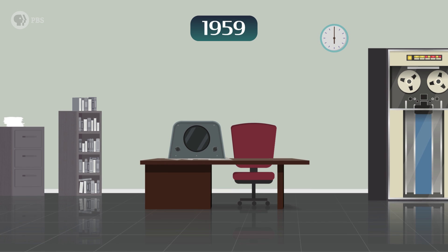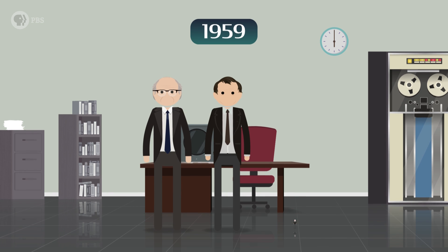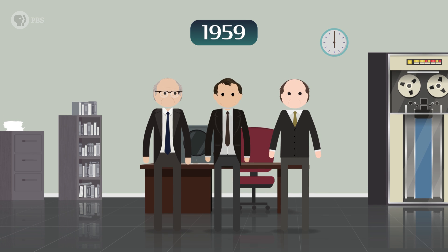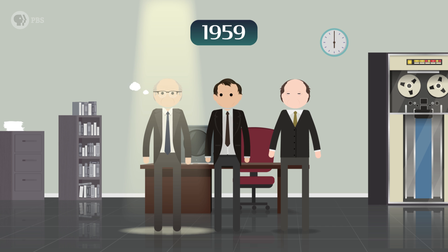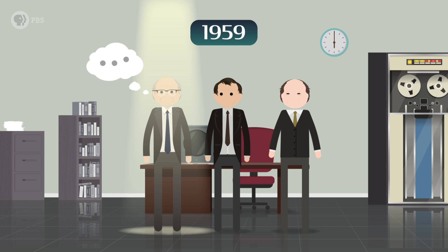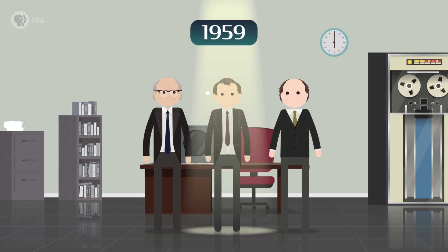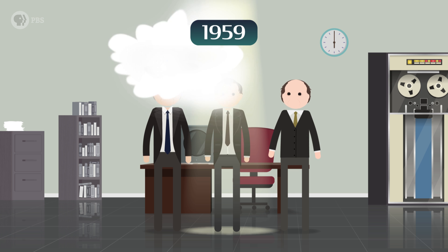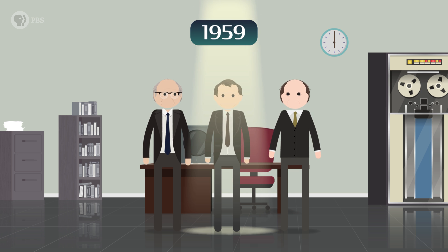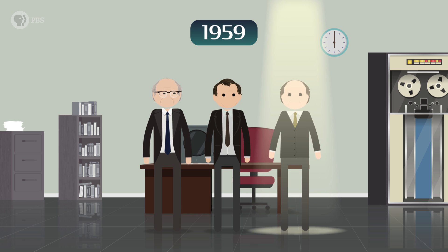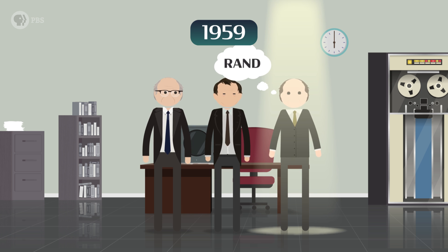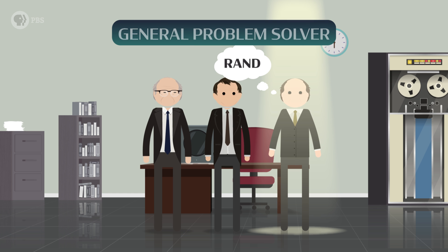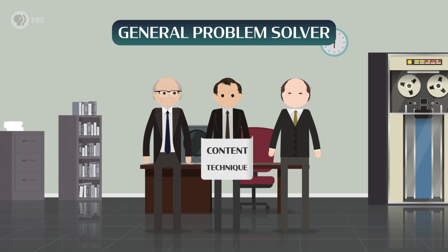Back in 1959, three AI pioneers set out to build a computer program that simulated how a human thinks to solve problems. Alan Newell was a psychologist interested in simulating how humans think, and Herbert Simon was an economist who later won the Nobel Prize for showing that humans aren't all that good at thinking. They teamed up with Cliff Shaw, who was a programmer at the Rand Corporation, to build a program called the General Problem Solver.